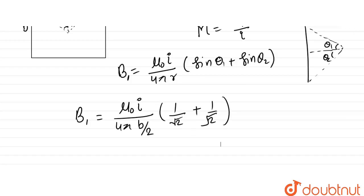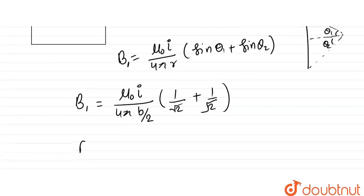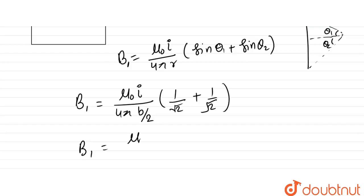So here we have the magnetic field at the center. B1 is 1 by root 2 plus 1 by root 2, which equals root 2. So mu naught I into root 2 upon 2 pi B, because 2 and 4 cancel, now only 2 pi B. This is the magnetic field due to one side.